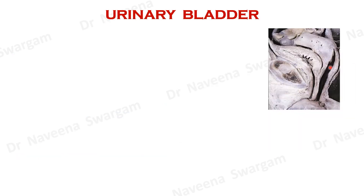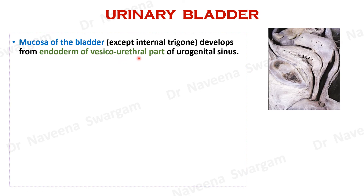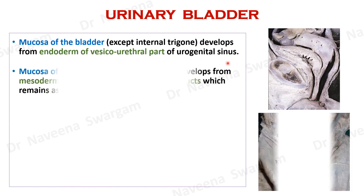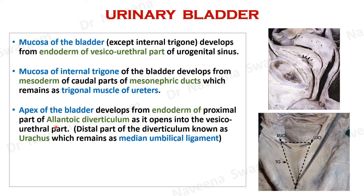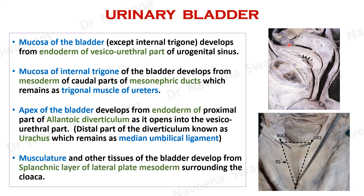Now let's summarize the development of urinary bladder. Its mucous membrane, except for the internal trigone, develops from the endoderm of the vesico-urethral part of the urogenital sinus, whereas the mucosa of the internal trigone develops from mesoderm of caudal parts of mesonephric ducts, which extends into the ureters in the form of trigonal muscle of ureters. The apex of the bladder develops from endoderm of the proximal part of allantoic diverticulum as it opens into the vesico-urethral part. The distal part of the diverticulum towards the umbilicus, known as urachus, remains after birth as the median umbilical ligament. The musculature and tissues forming the wall of the urinary bladder develops from the splanchnopleuric layer of lateral plate mesoderm.